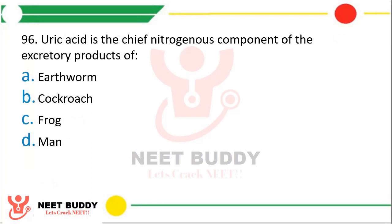Question number 96: Uric acid is the chief nitrogenous component of the excretory products of — Option A: earthworm, Option B: cockroach, Option C: frog, Option D: man. The correct answer is Option B, i.e., cockroach.